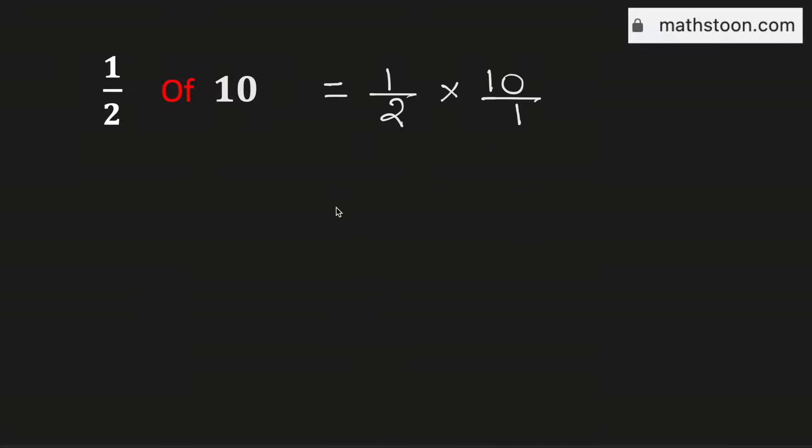Now simplifying, we will get 1 times 10 in the numerator which is 10 and 2 times 1 in the denominator which is 2.